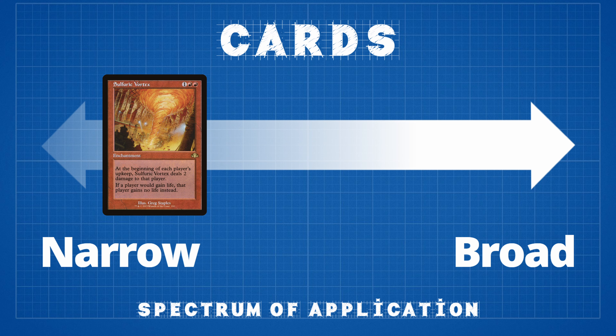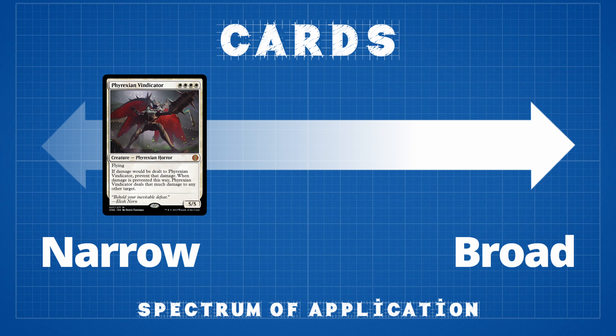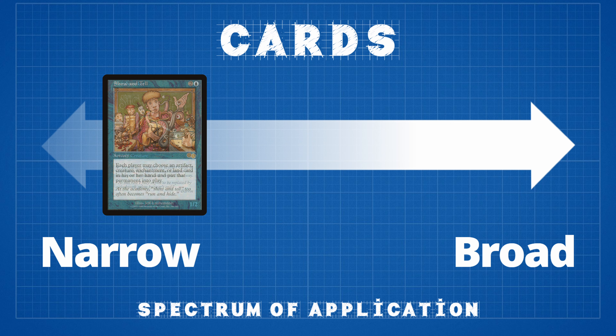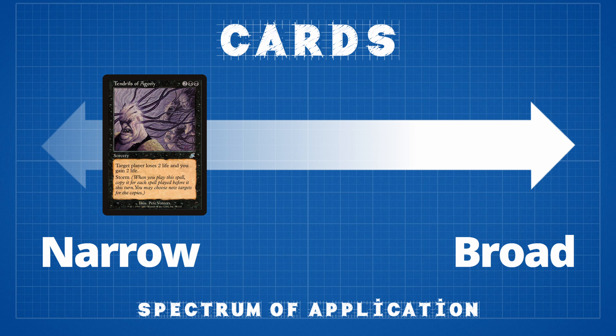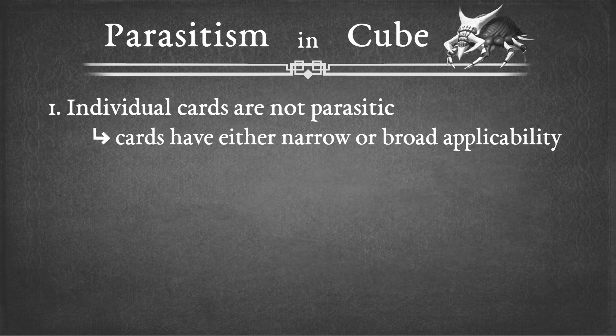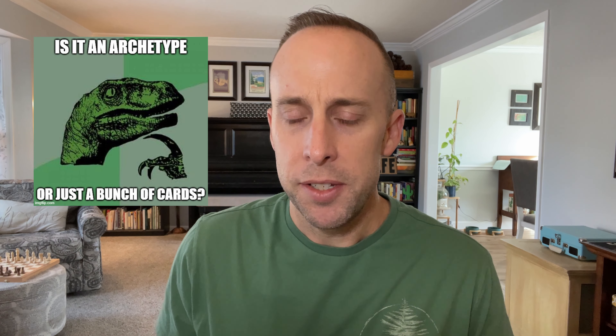Other examples of cards with narrow applicability would be Phyrexian Vindicator — because it takes four white mana pips — Metalworker, a card that's really only looking to do artifact ramp strategies, Show and Tell which is really only good in a cheat-type strategy, and Tendrils of Agony, a card which is very specific within the storm archetype. This sums up the point: cards have either narrow or broad applicability.